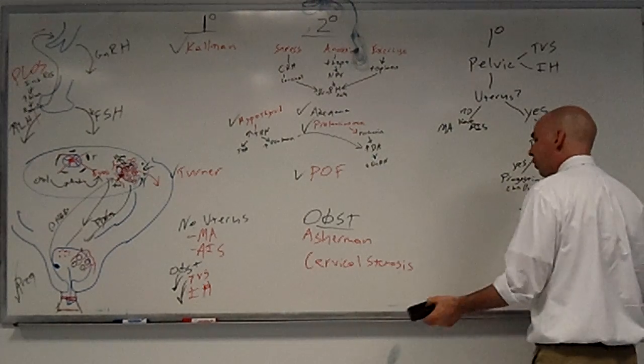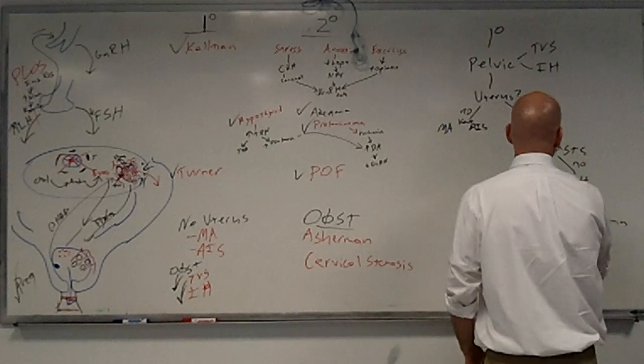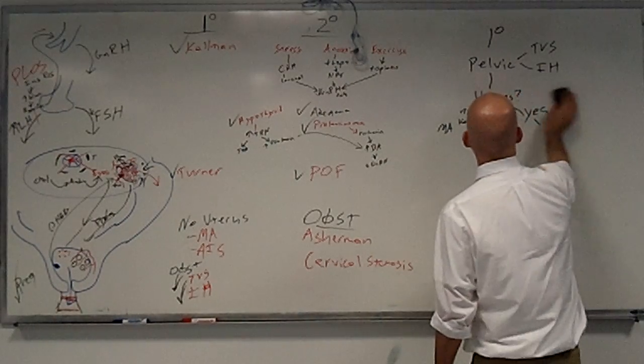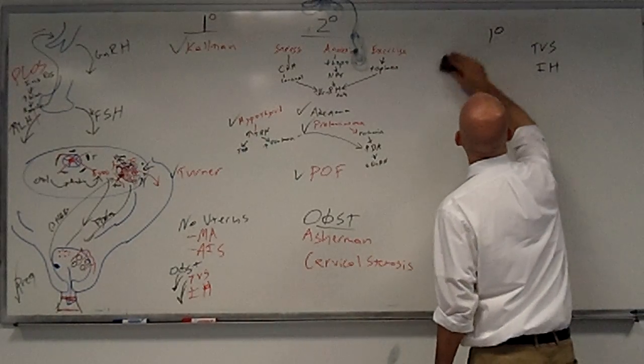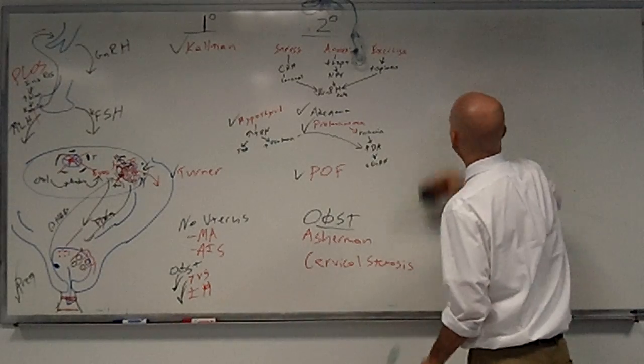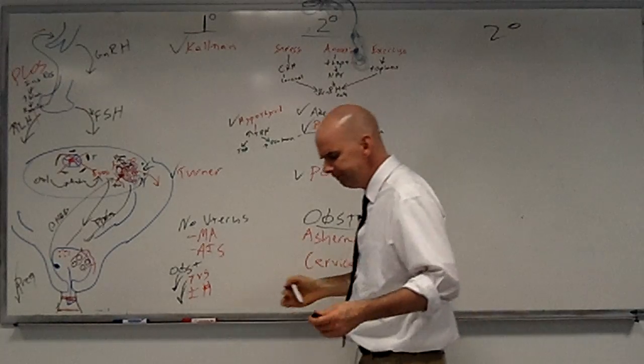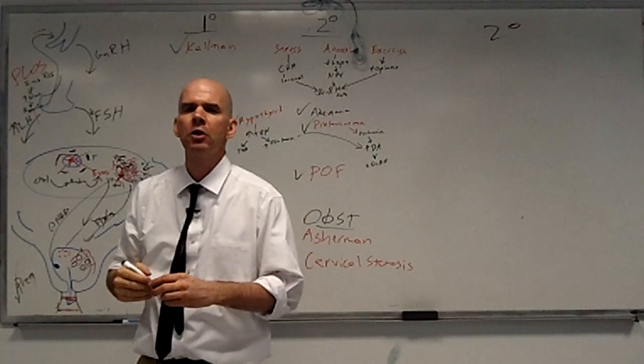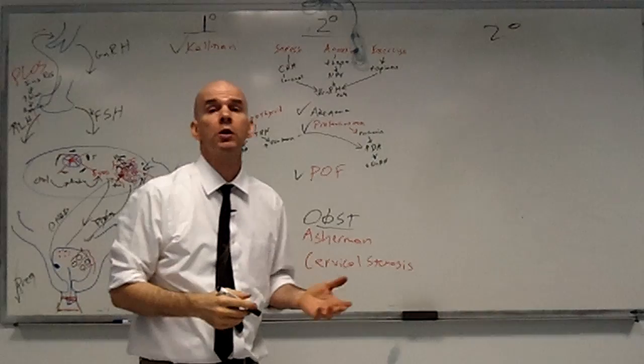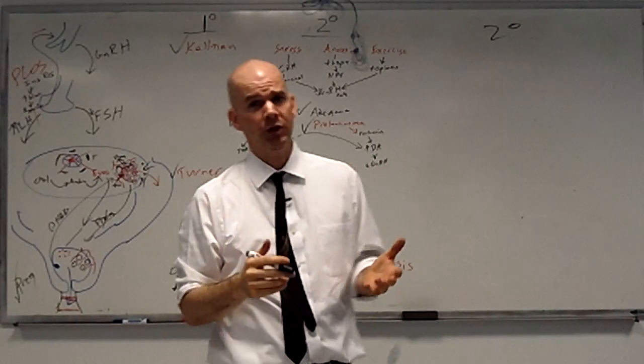Okay, so that covers primary amenorrhea. Now let's talk about how we could work up secondary amenorrhea. With secondary amenorrhea, the first thing you're going to want to check is beta-HCG.